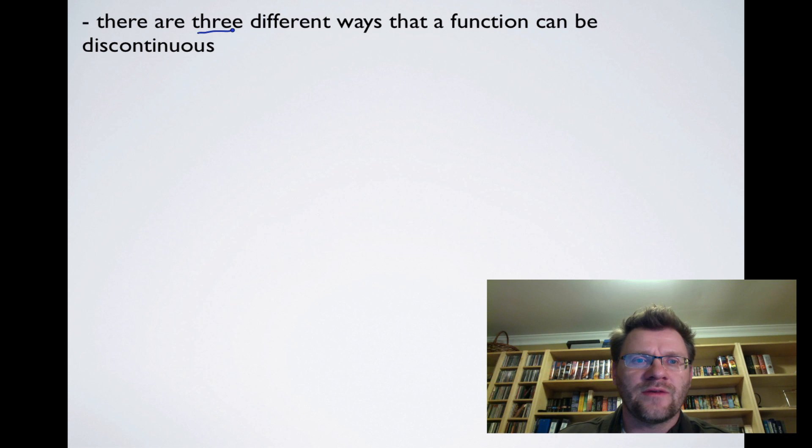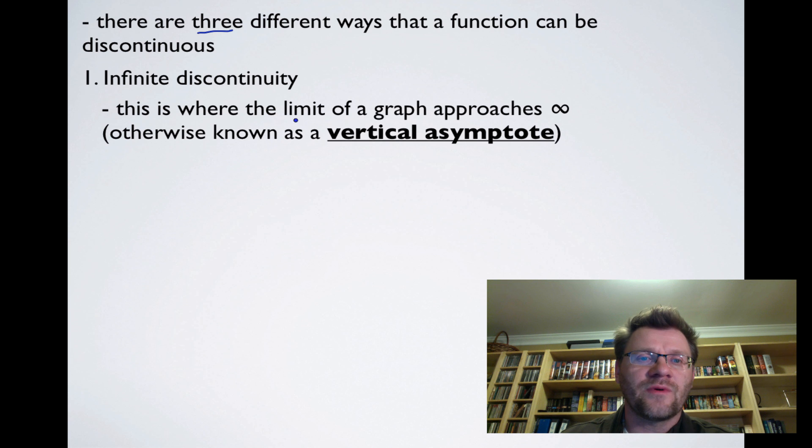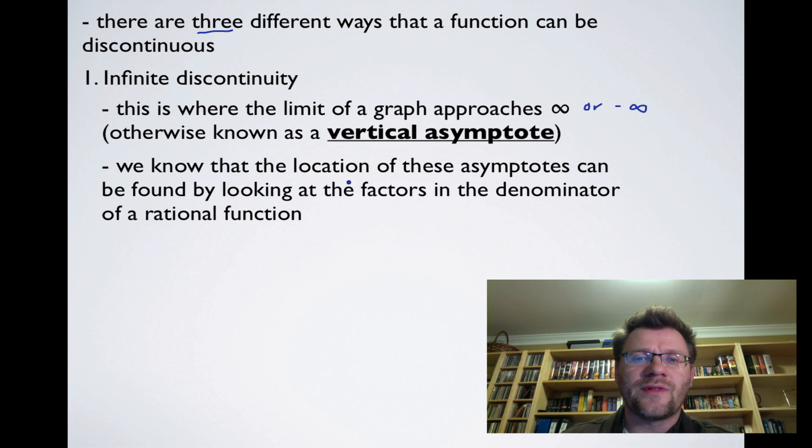So there are three different ways in which a function can be discontinuous. The first one is called an infinite discontinuity. And this is where the limit of the graph approaches infinity, or negative infinity. And otherwise we know this as a vertical asymptote. And we know that the location of these asymptotes can be found by looking at the factors in the denominator of a rational function.